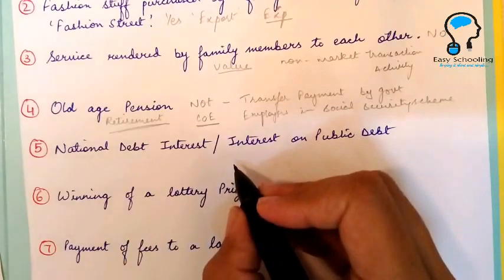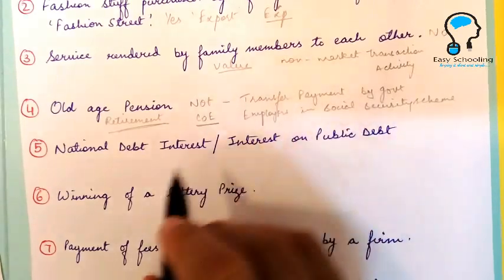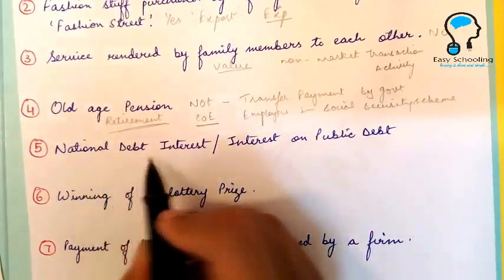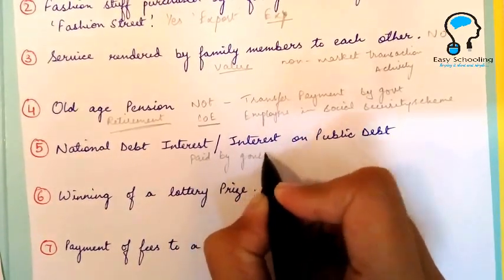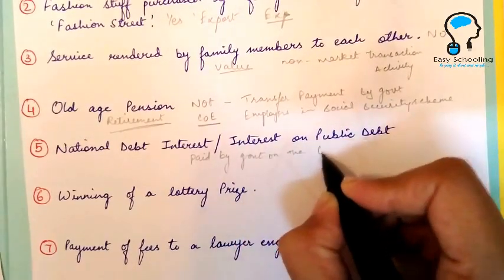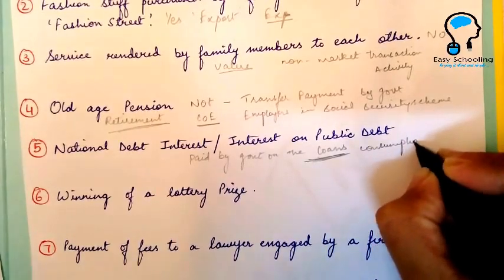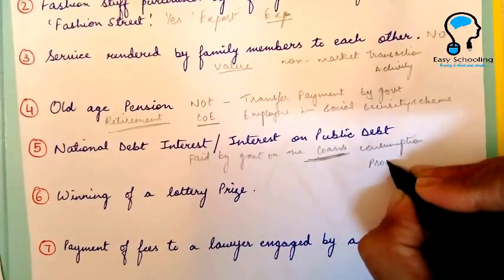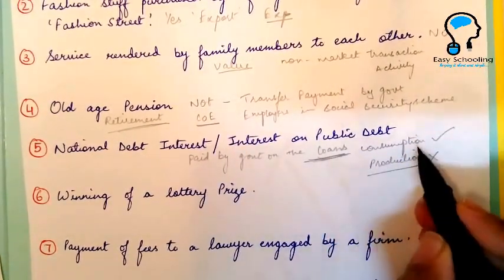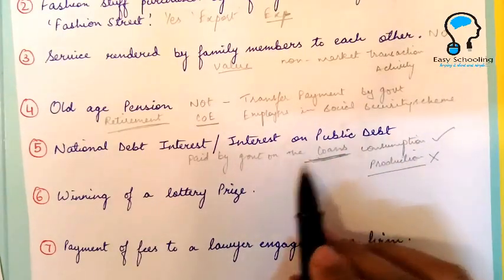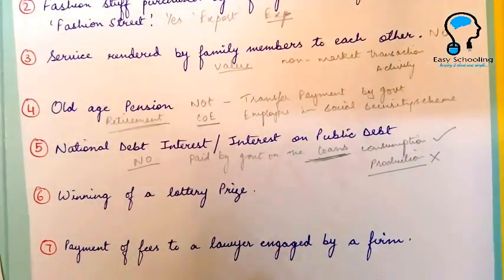Next is national debt interest, or interest on public debt. Just like we do not include income tax in national income because it is not related to production of goods and services, in the same way national debt interest is also the interest paid by government on loans. These loans are for consumption purpose and not production purpose, so this will not be included in national income.